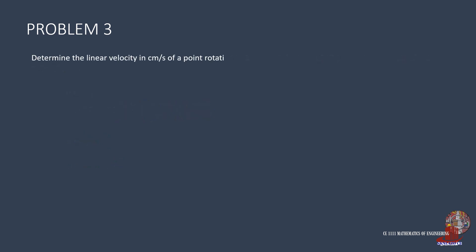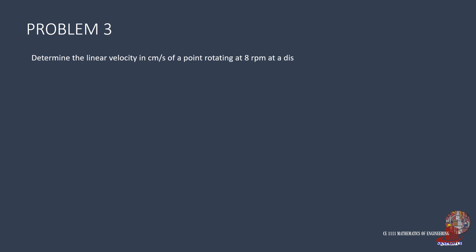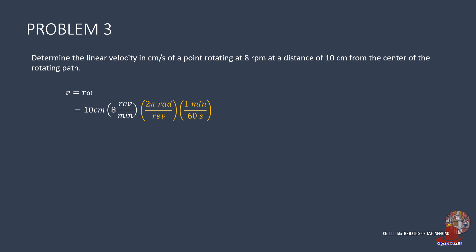Using 4 rpm with 15 cm radius: plugging these parameters into the equation and multiplying the conversion factor where revolutions and minutes cancel, gives linear velocity V as 2 pi, or 6.2832 cm per second. With 8 rpm and 10 cm radius, substituting and converting yields 8 thirds pi, or 8.3776 centimeters per second.